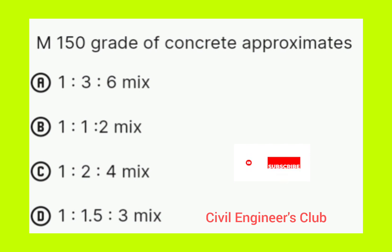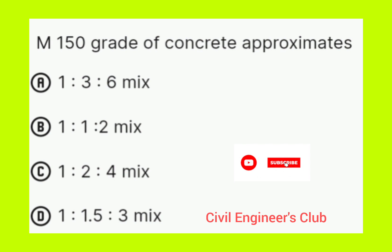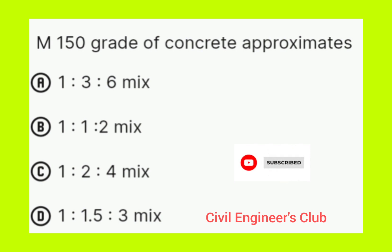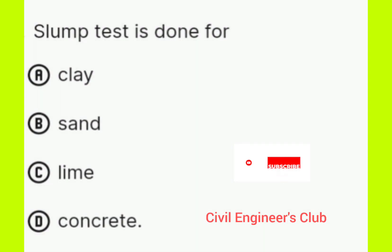Question number one: M15 grade of concrete approximate mix. Option A: 1:3:6 mix. Option B: 1:1:2 mix. Option C: 1:2:4 mix. Option D: 1:1.5:3 mix. The correct answer is option C, 1:2:4 mix.